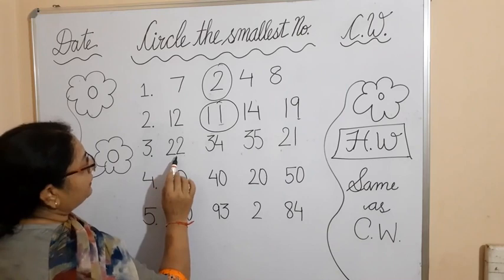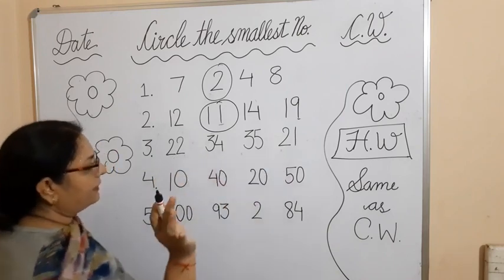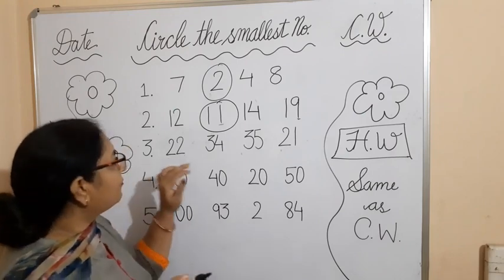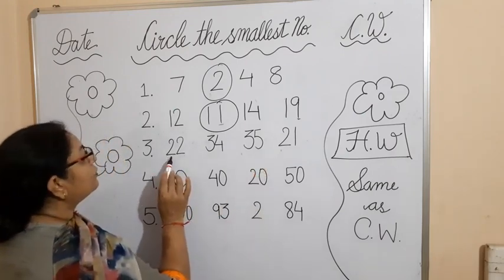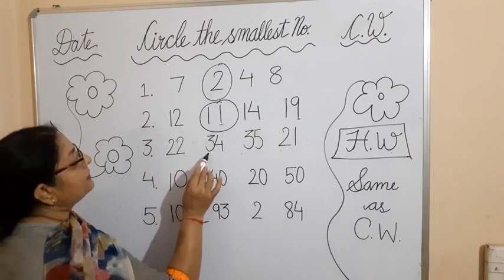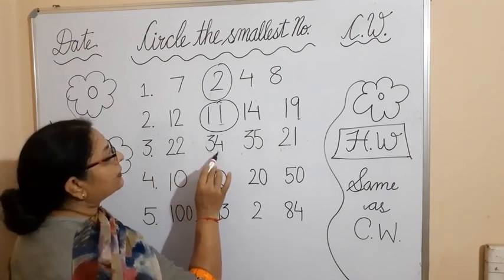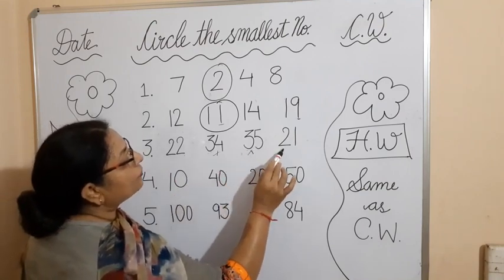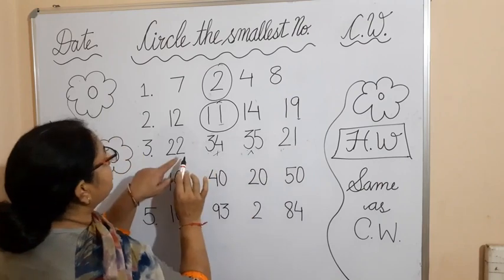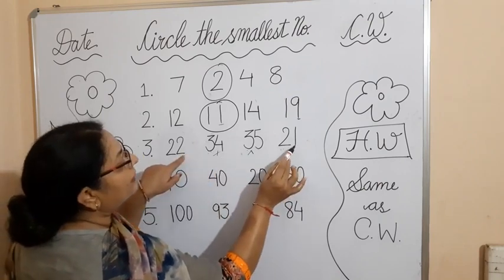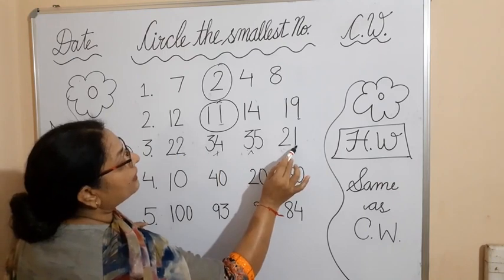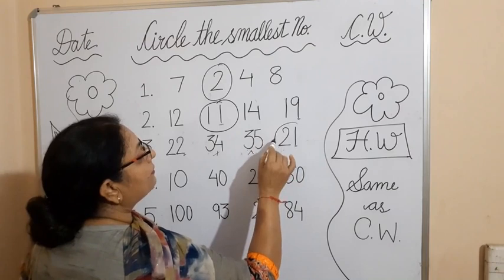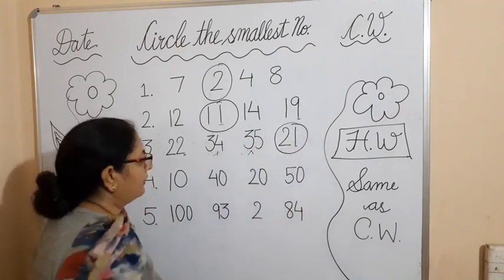For the third example the numbers are 22, 34, 35, and 21. Use the same method — compare the tens place first. The tens are 2 and 3. Since 3 is greater than 2, we are not considering the 3-series numbers. Now compare only the ones of the 2-series: we have 2 and 1. Since 1 comes first, 21 is the smallest number and we have to make the circle here.